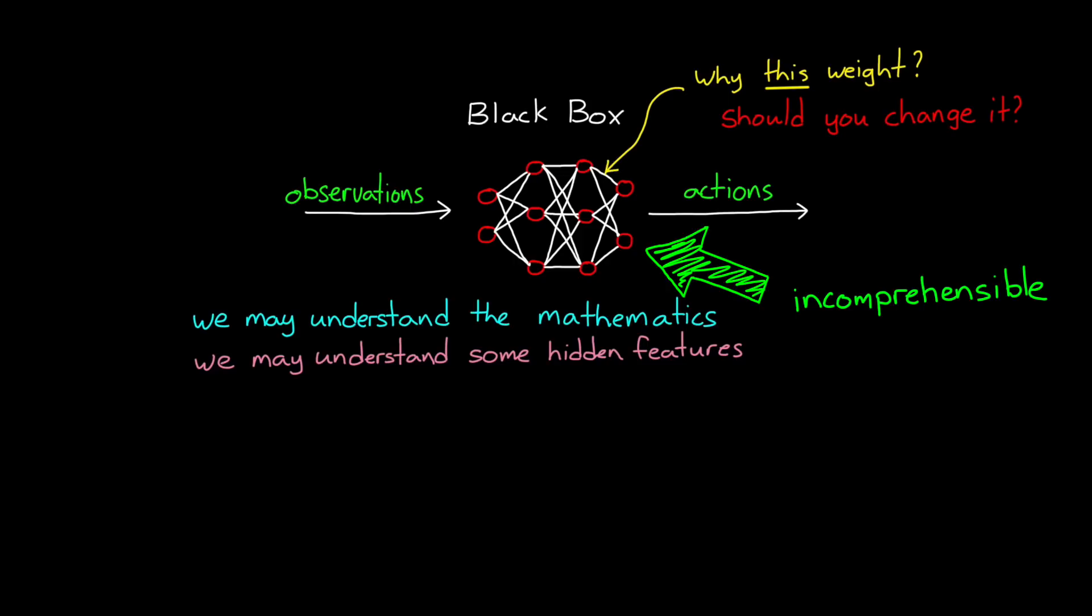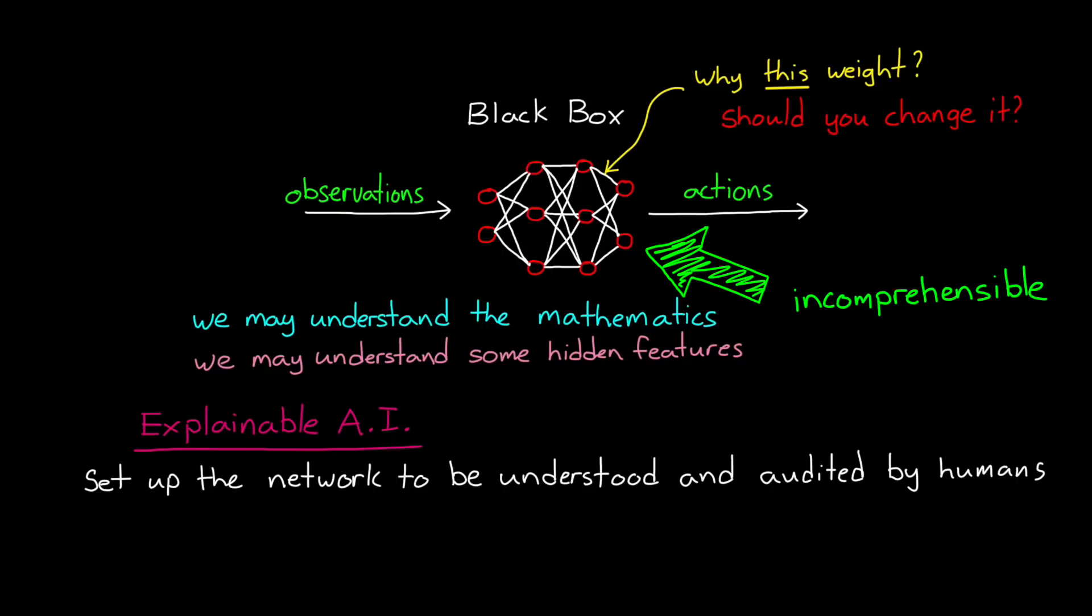Now there is active research that is trying to push the concept of explainable artificial intelligence. This is the idea that you can set up your network so that it can be easily understood and audited by humans. However, at the moment the majority of RL generated policies still would be categorized as a black box.